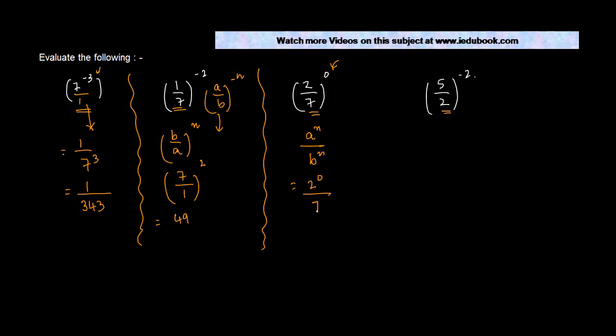So we get two to the power zero upon seven to the power zero. This is what? One. This is again what? One. So the answer is one. In fact, that's the rule basically which says that anything to the power zero is equal to one.